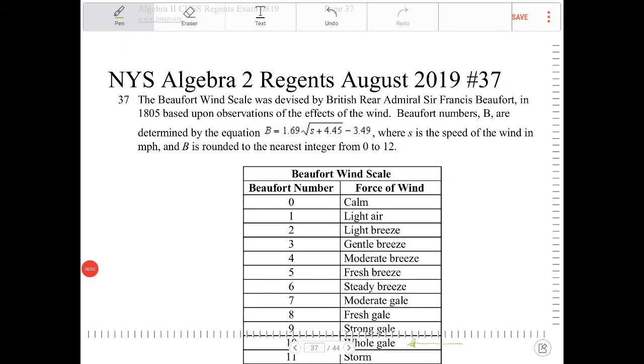The Beaufort Wind Scale was devised by British Rear Admiral Sir Francis Beaufort in 1805 based upon observations of the effects of the wind. Beaufort numbers, b, are determined by the equation b equals 1.69 square root of s plus 4.45 minus 3.49, where s is the speed of the wind in miles per hour, and b is rounded to the nearest integer from 0 to 12.